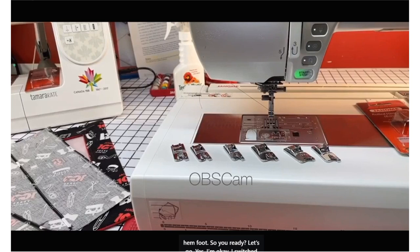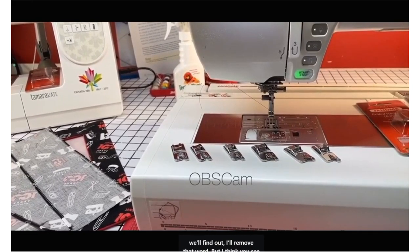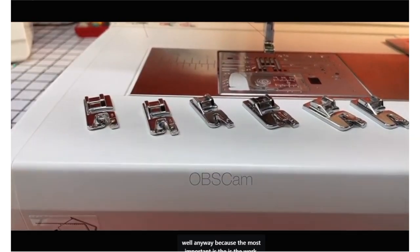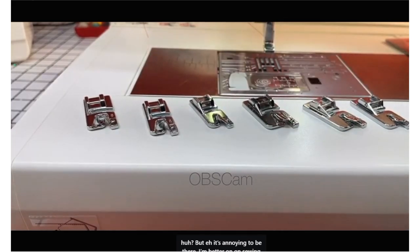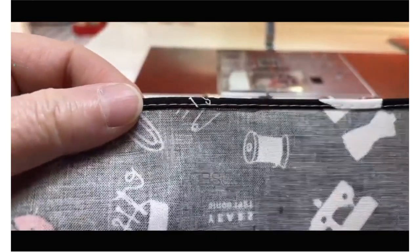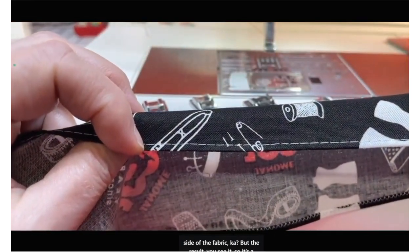I switched camera. Somebody asked me to remove OBS cam. I'd like to find a way to do it, but I don't know how. I'm better on sewing than on computers. So, what is a rolled hem? This is a rolled hem. It's done on the wrong side of the fabric, but you see the result.